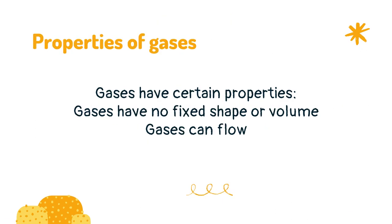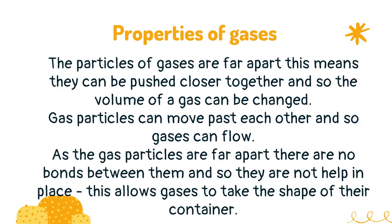Gases have certain properties. Gases have no fixed shape or volume, and gases can flow. The particles of gases are far apart, which means they can be pushed closer together and so the volume of a gas can be changed. Gas particles can move past each other and so gases can flow. As the gas particles are far apart there are no bonds between them and so they are not held in place.